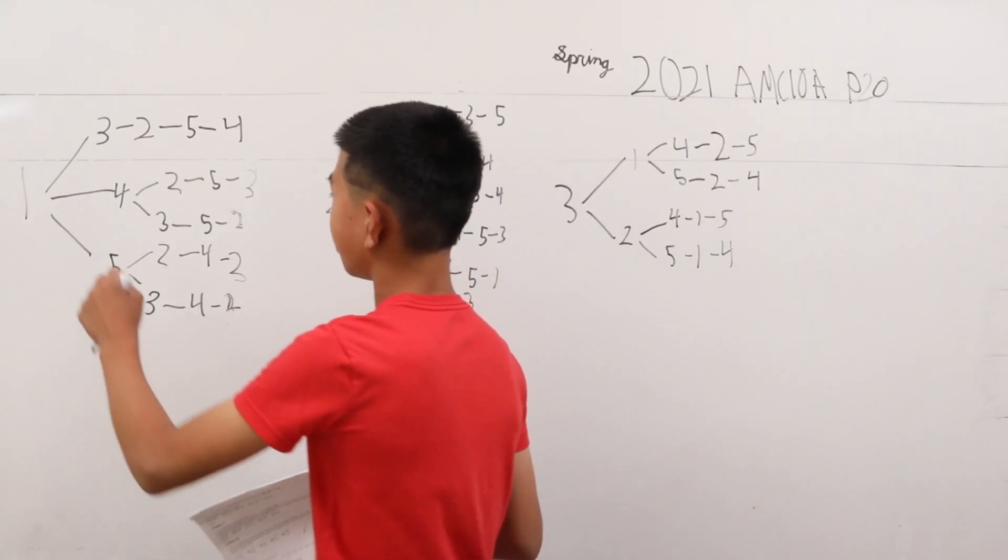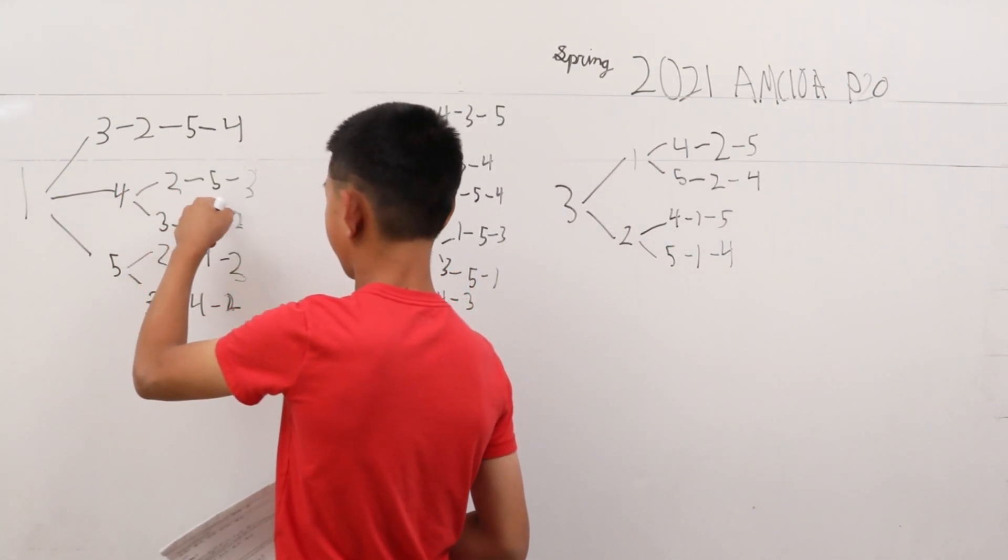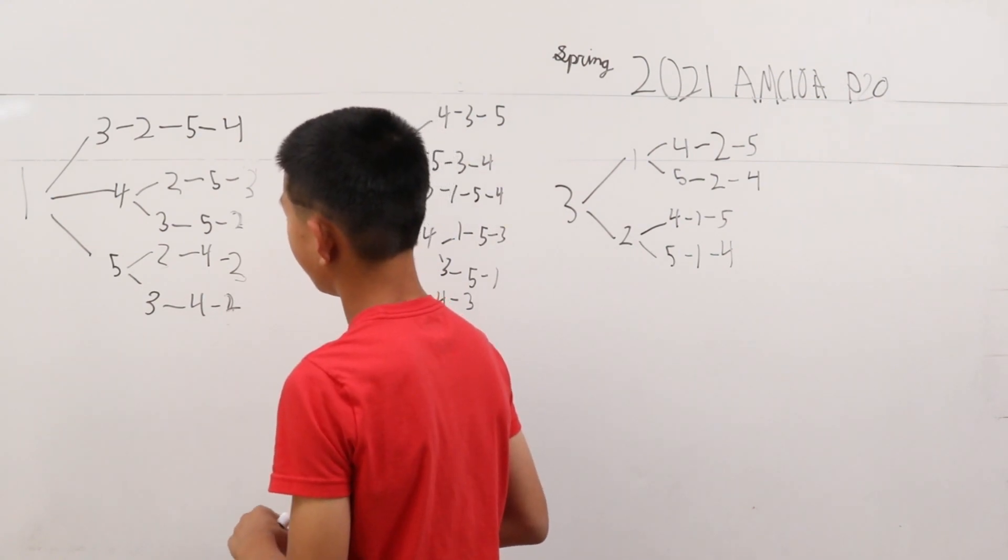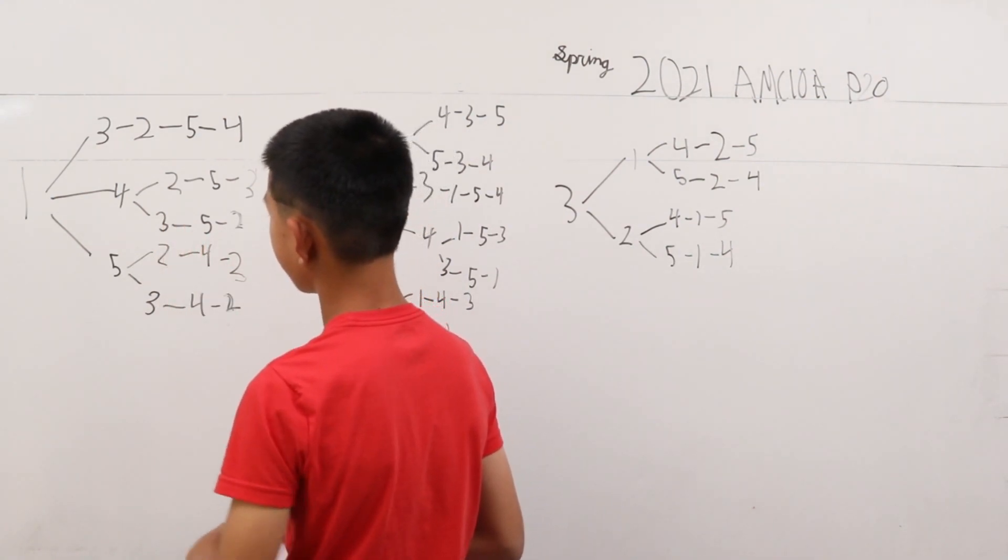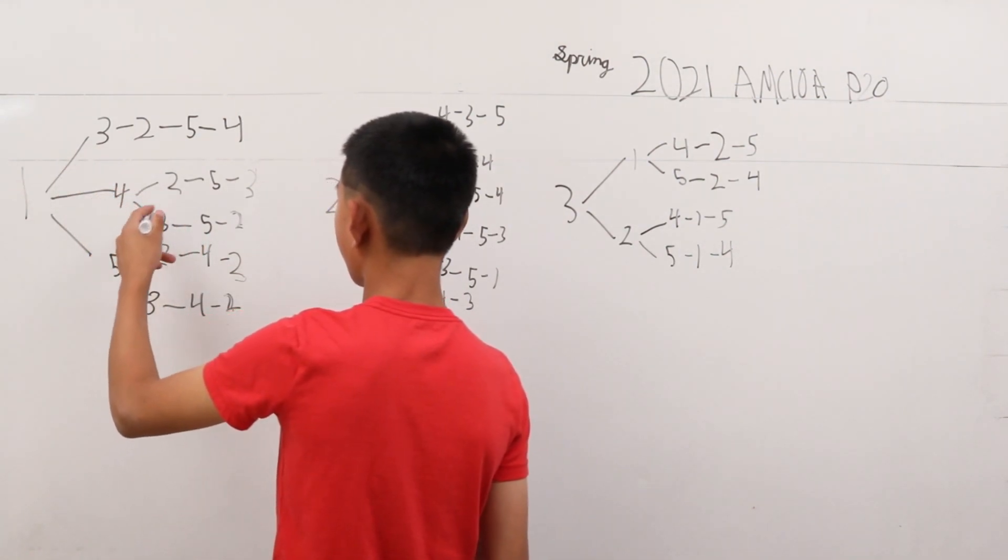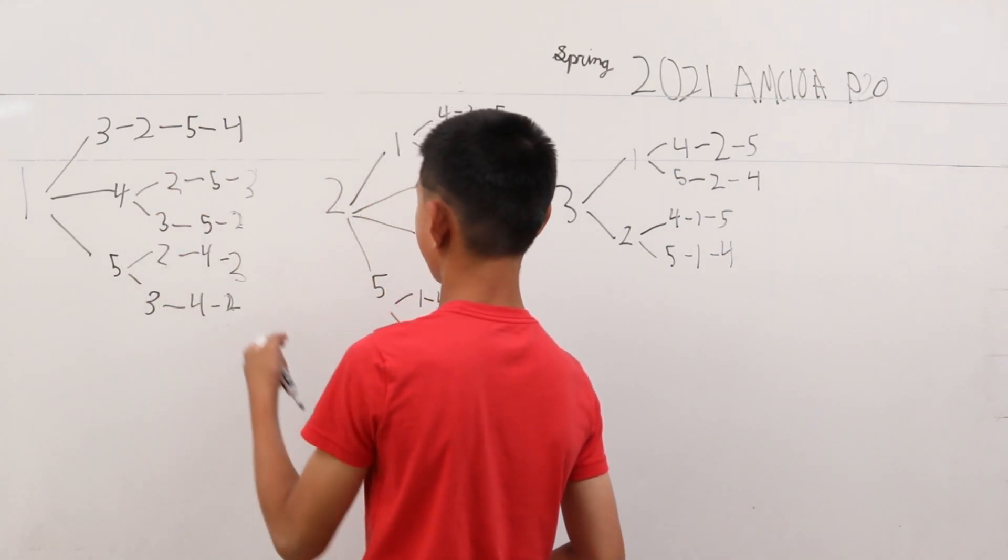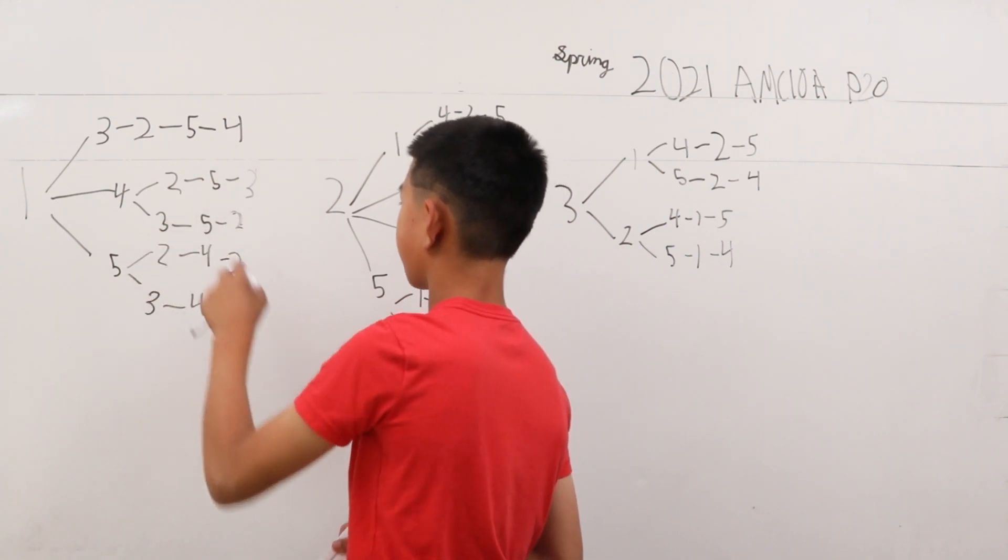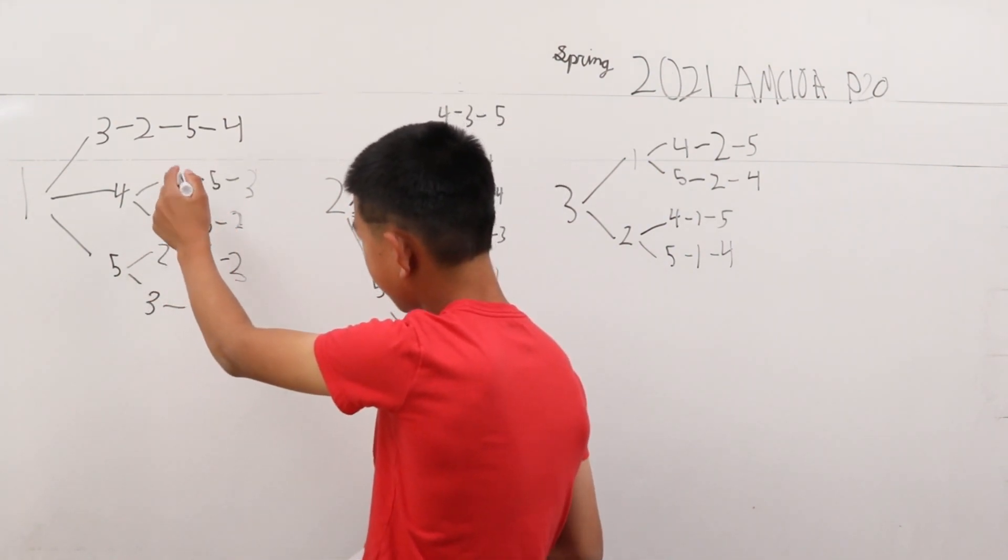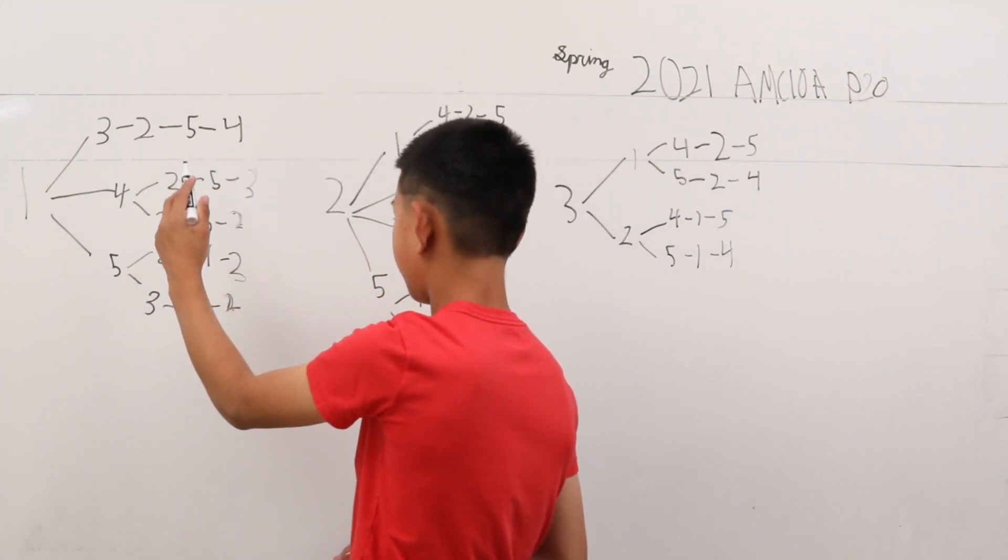So when you get to the last three digits and there's more than two possibilities for it. Let's just take the 1, 4, there's two possibilities where it can go starting from 2 or 3. Now the first sequence is 2, 5, 3 and then the second one is 3, 5, 2.